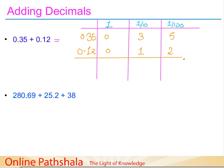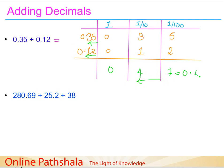After converting into ones, tenths, and hundredths, we add them. The same rules that apply for whole numbers apply here for decimals. We add from the rightmost column: 5+2=7, 3+1=4, 0+0=0. We then place the decimal point by checking both numbers — in each the decimal is placed after two digits, so in our answer we also place it after two digits.